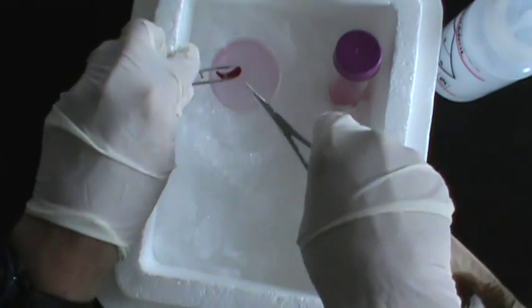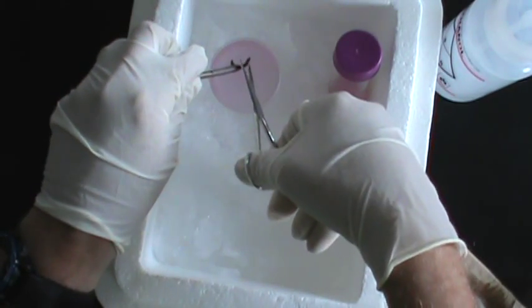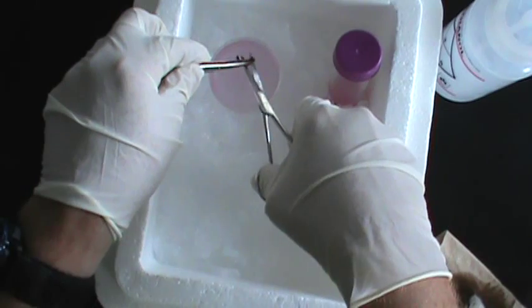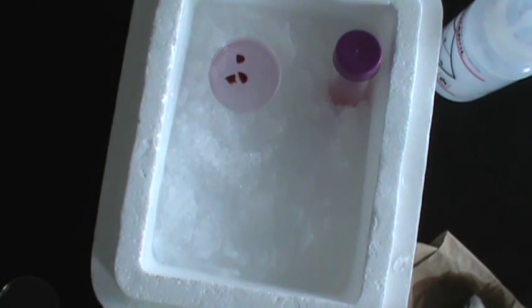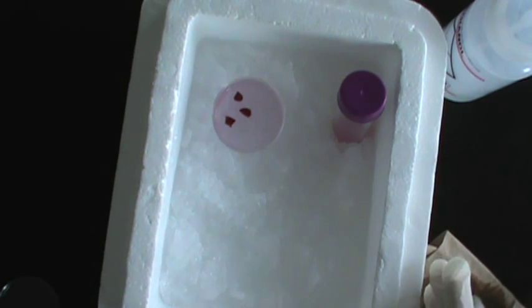With the scissors, cut the spleen into three or four pieces depending on its size. Now what we want to do is we want to take this spleen and smash it into a single cell suspension. One of the reasons we use the spleen is because it does not contain any connective tissue and so it can easily be broken apart.